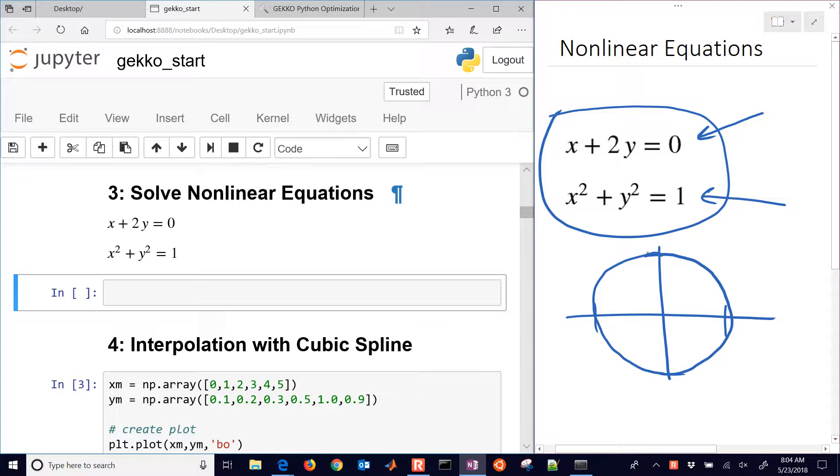And then the first one there is going to be just a line, and so the solution is where they intersect.